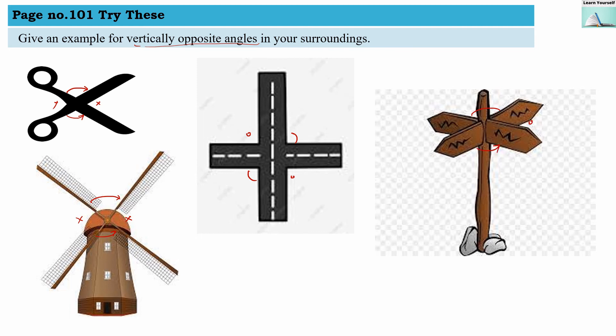Then in the fourth example, the road signs where these angles are vertically opposite to each other. So these are some of the examples where we can show that these angles are vertically opposite to each other, and that's why their measures will be the same.